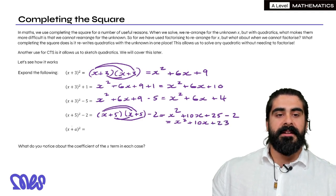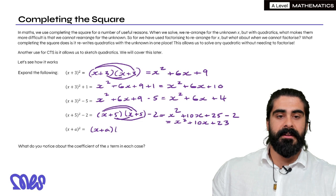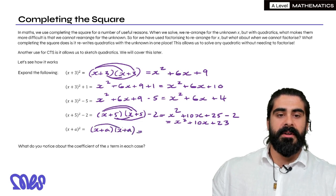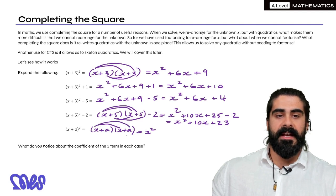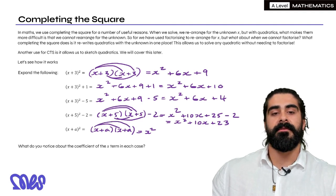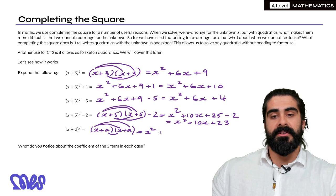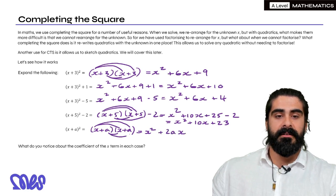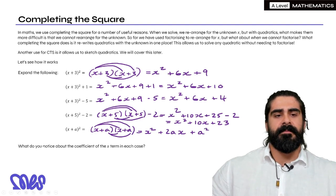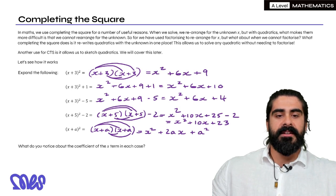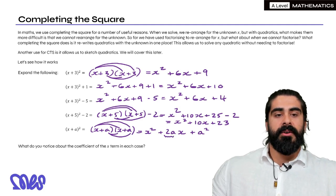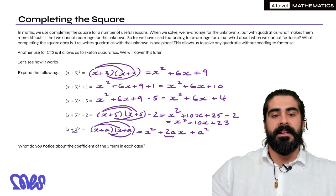Then finally, if we were to expand X plus A squared, now we're doing this so that we can see the pattern. So we have X plus A, X plus A. So expanding we have X squared plus XA, or AX is a better way, because remember A is the number here that we are referring to. So XA plus another AX makes 2AX, and then plus A squared.